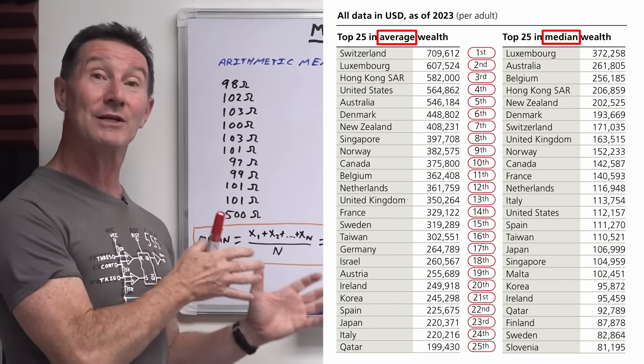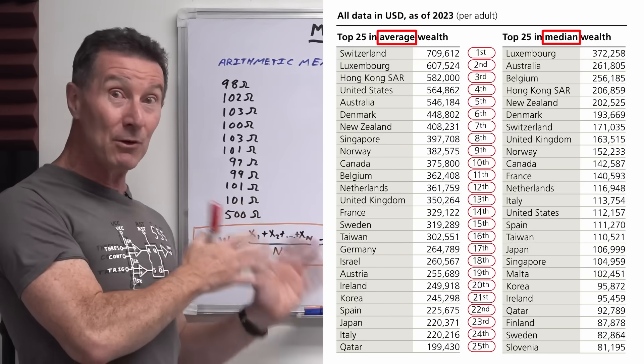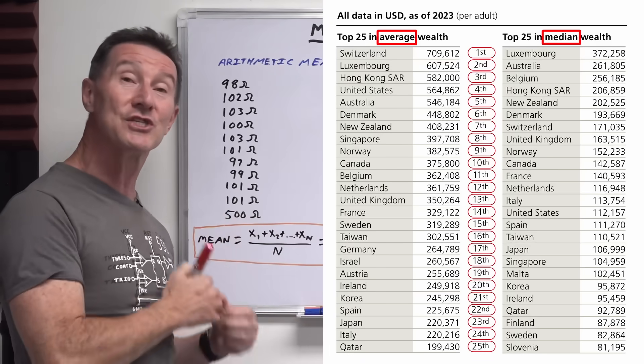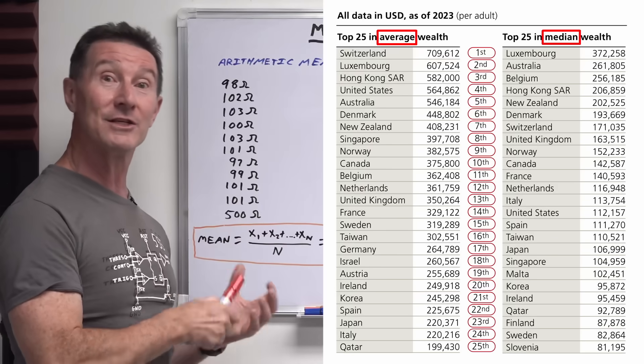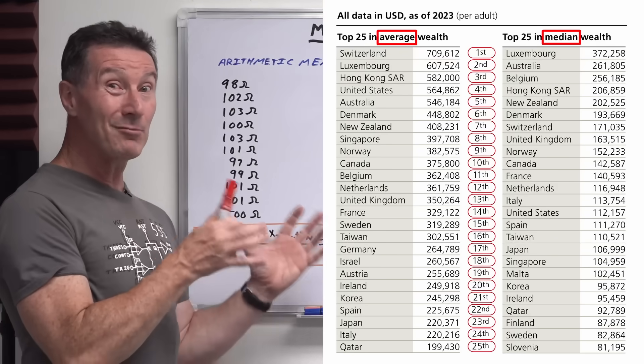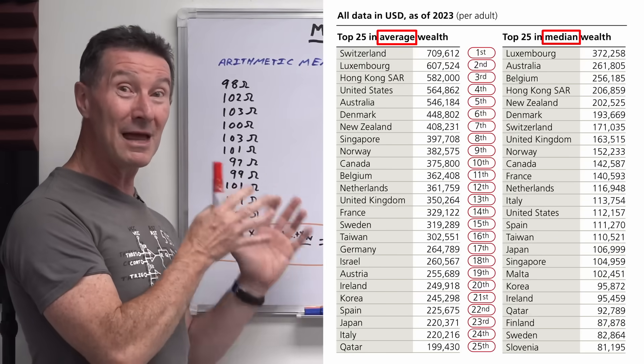So median is the correct one to use here. Otherwise all those richy rich Bill Gates's in the US, they're just skewing that data right to the high side.